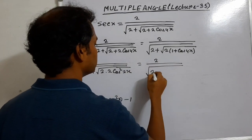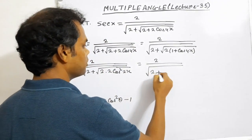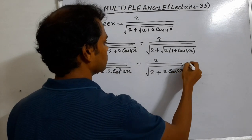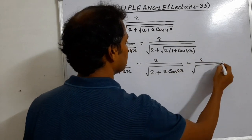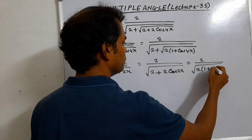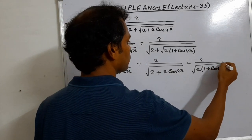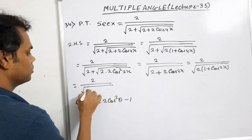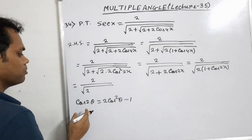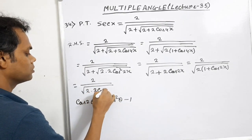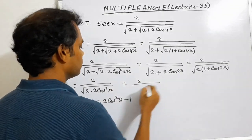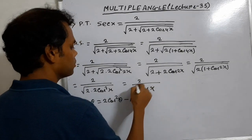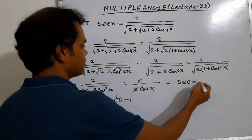Now, the square root of 2 times 2, and the square root of cos squared 2x is cos 2x. If we take 2 common from these terms, we get 2 into 1 plus cos 2x. Again, if we use the formula, 1 plus cos 2x equals 2 cos squared x. So the square root of 2 squared is 2, and the square root of cos squared x is cos x. The 2s cancel each other, and 1 by cos x is sec x. This is our LHS part.